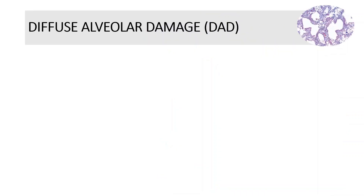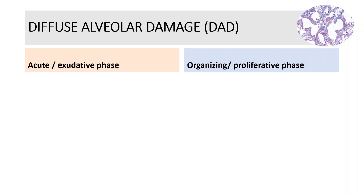The histologic findings in ARDS will depend on when a biopsy is obtained during the course of the disease. Histologically, diffuse alveolar damage is typically divided into an acute exudative phase and an organizing or proliferative phase. The acute phase generally occurs during the first week following the pulmonary insult, with the organizing phase occurring after the first week.